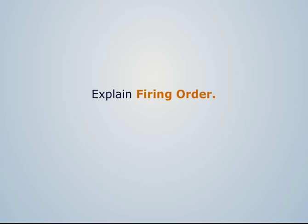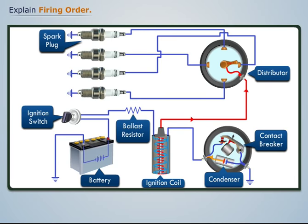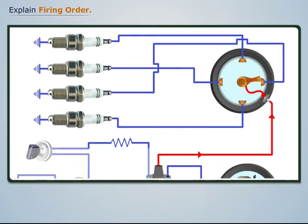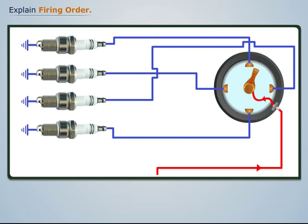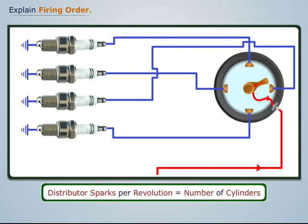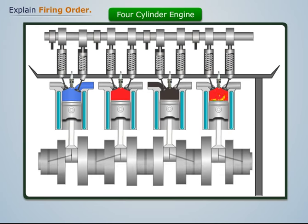We know that in an ignition system the distributor passes the spark to each of the spark plug leads one at a time. So we can say that in one revolution, the number of sparks produced by the distributor is equal to the number of cylinders in the engine. Now let's consider a four-cylinder engine.